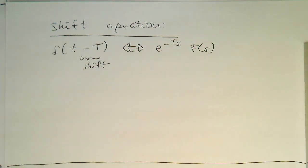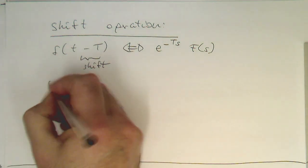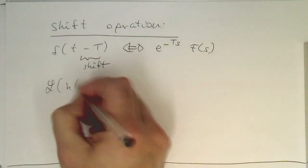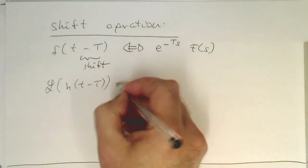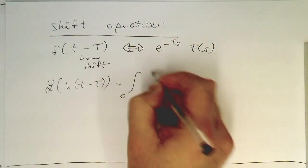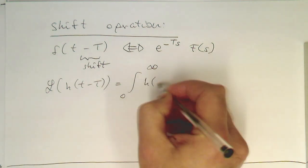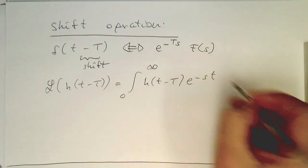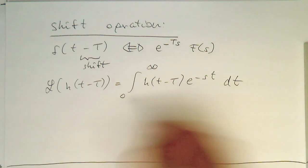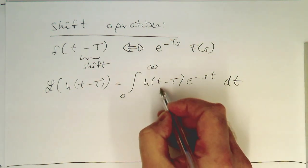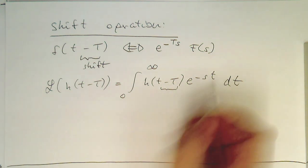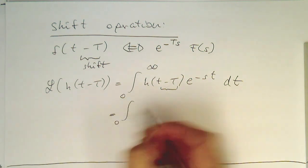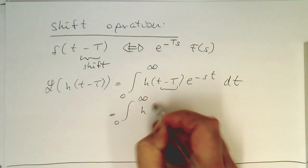So how can we prove that? Let's say we've got our Laplace transform of h of t minus T. And then this is, running per definition, the integral of h of t minus T times e to the minus s·t dt. That's our definition of the Laplace transform. Now we do the trick we've done before — we move this T in here. And we can do this because, per definition, our h is causal, so we have no trouble with that.